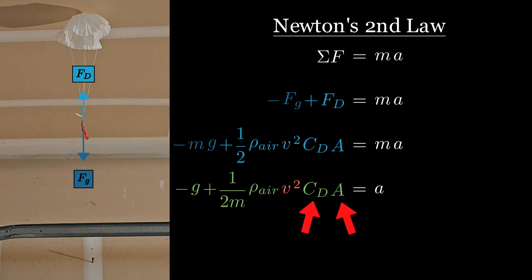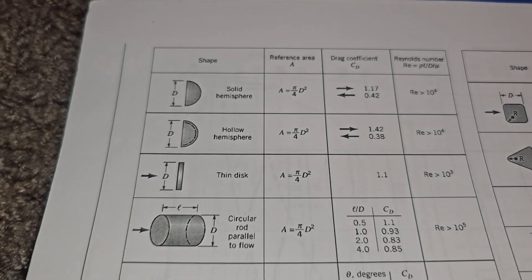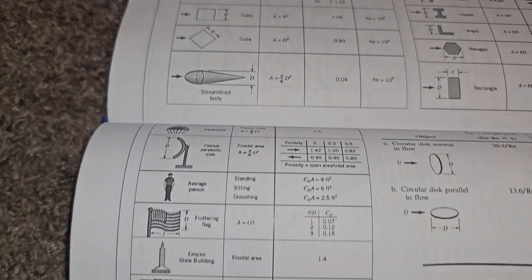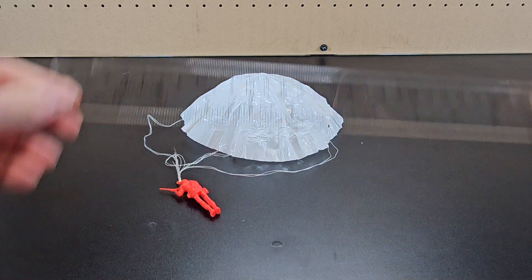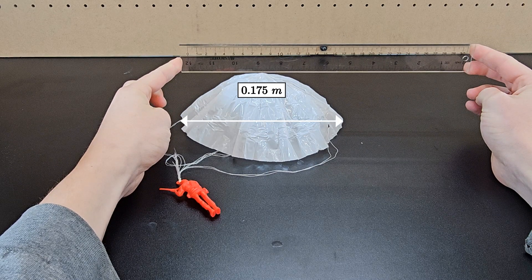Lastly, the drag coefficient and the reference area work together to account for both the shape and the size of a falling object. Looking up the drag coefficient for a parachute shape gets you a value of 1.4, and then the corresponding frontal area can be calculated using the measured diameter of about 17.5 centimeters, assuming the chute looks something like this as it falls.